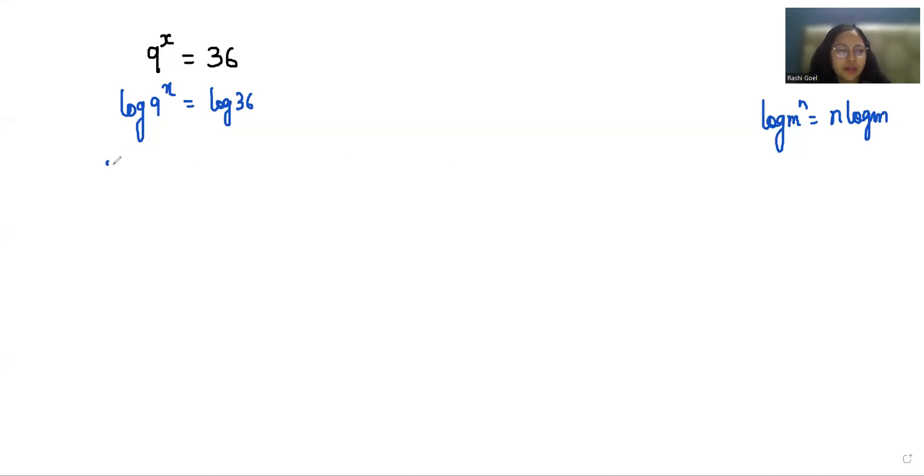So it becomes x log 9 equals log 36. I'm going to divide both sides by log 9. So x equals log 36, which we can write as log(9 × 4) over log 9.